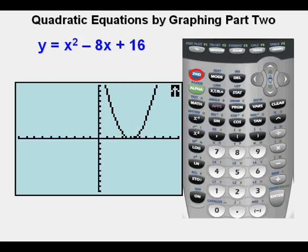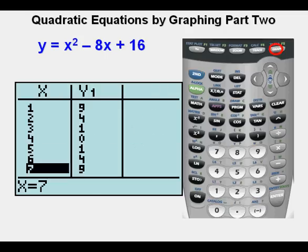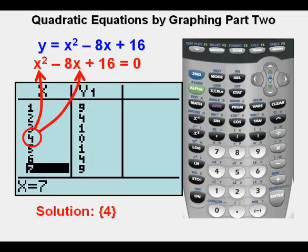Joe can look at the table view by pressing second, then graph which accesses the table view. He sees a solution at x equals 4 and notices that y goes up from either side of 4. 4 is the only number that will satisfy this quadratic equation. This situation is when the equation is a quadratic square, sometimes called a perfect square. We'll be looking at perfect squares more closely when we learn to complete the square to solve quadratic equations, and also when solving by factoring.